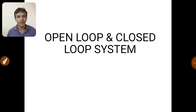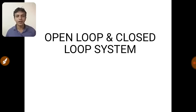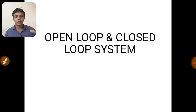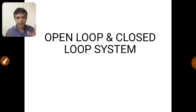So, what is meant by a system? When many components are combined together to perform a particular action, then the entire setup becomes a system. A control system means the desired output of the system can be obtained by controlling or varying the input. If this can be done, then the system is said to be a control system.